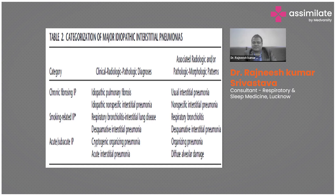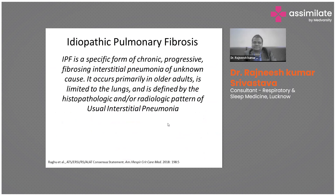These three are the major classifications of ILDs: chronic fibrosing, smoking-related, and acute subacute. Other than that, there may be some rare subtypes known as lymphoid interstitial pneumonia and pleuroparenchymal fibroelastosis. In IPF we see UIP pattern, and in NSIP we see other patterns, which will be discussed later.